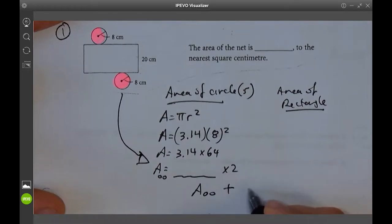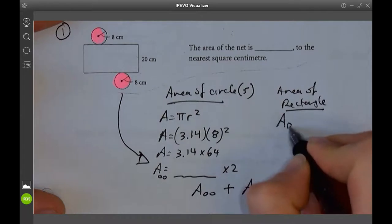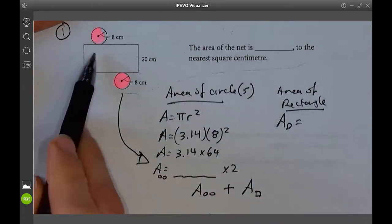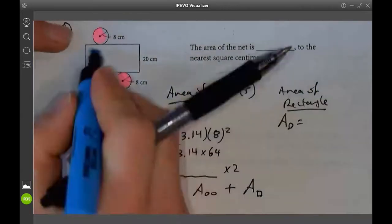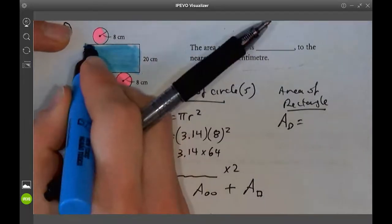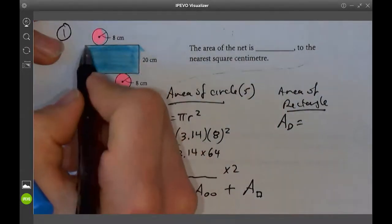All right. And you're going to add that to the area of a rectangle. What's the area of the rectangle? The area of the rectangle is right here. So this is the rectangle. Okay, I know that this is 20. What is this?